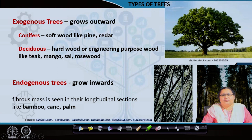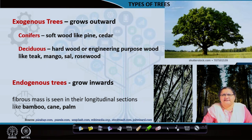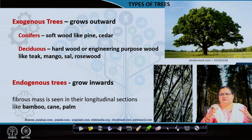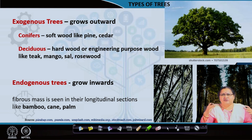We have different types of trees. Highlighted here: exogenous trees and endogenous trees. Under exogenous trees, we have the conifers and the deciduous. The picture at the top is a deciduous tree, whereas the picture below is a conifer. You can see the conifers are long but not much in diameter, whereas the deciduous tree has a larger trunk size and is shorter in length.